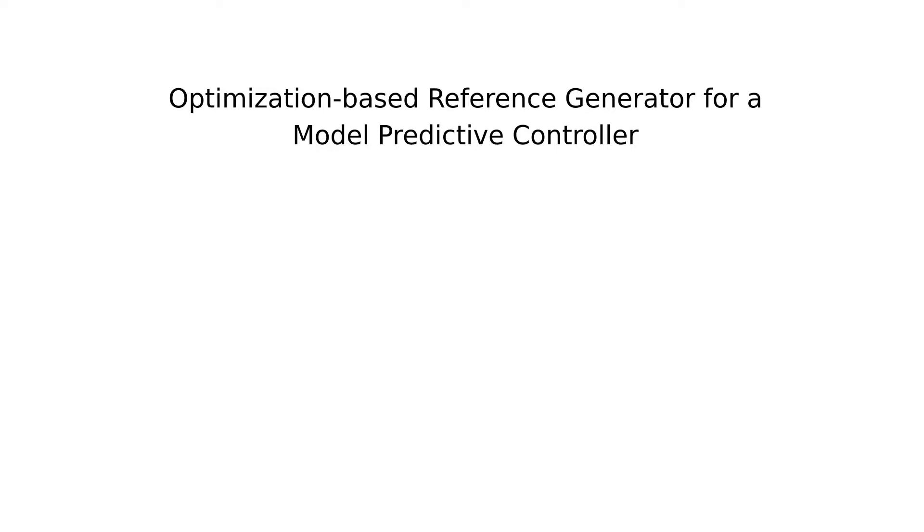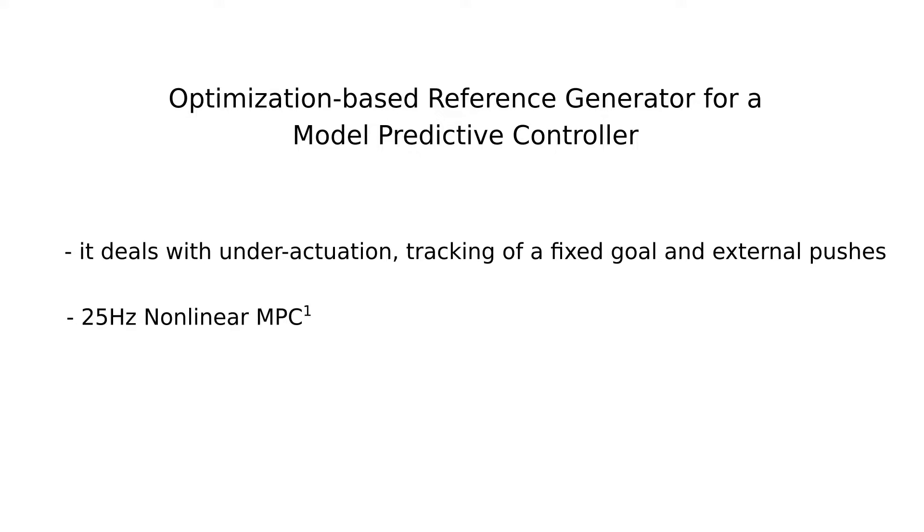In this paper, we present our optimization-based reference generator. It computes center of mass trajectories and ground reaction forces for a model predictive controller approach. It deals with the under-actuation of the two-stance phase of the trot when the robot has to track a fixed goal or recover from external pushes.